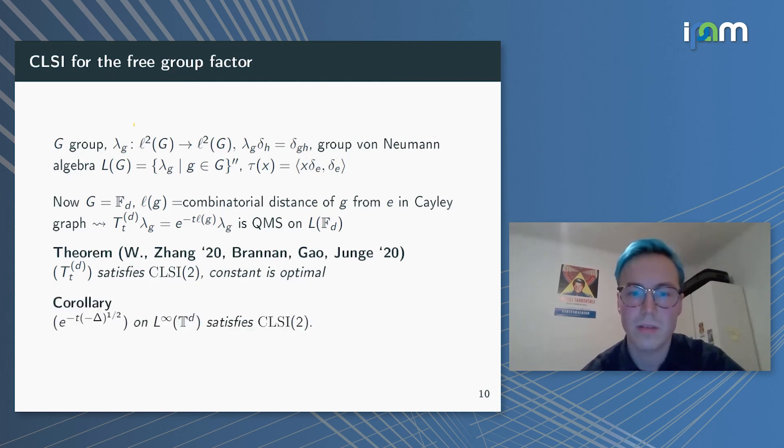One can also note one more, not so quantum information but classical geometrical, corollary. This in particular means that the Poisson semigroup on the d-dimensional torus also satisfies CLSI with constant 2. And now I think I'm at the end of my time, which is a perfect point to stop here. Thank you for your attention.